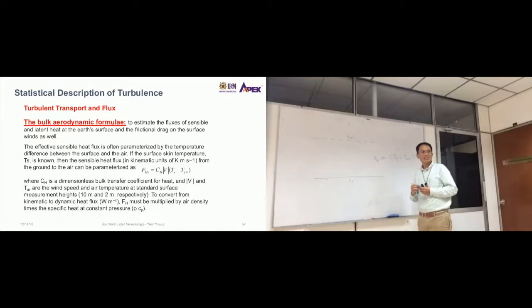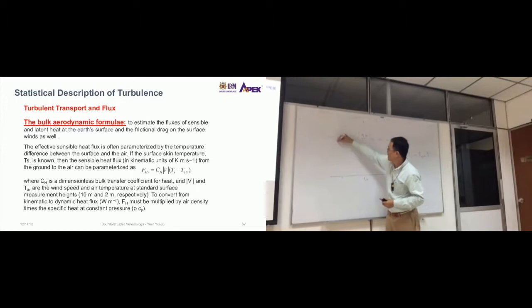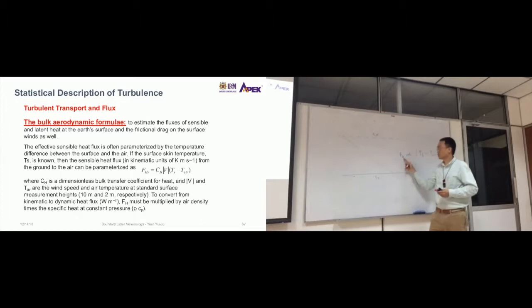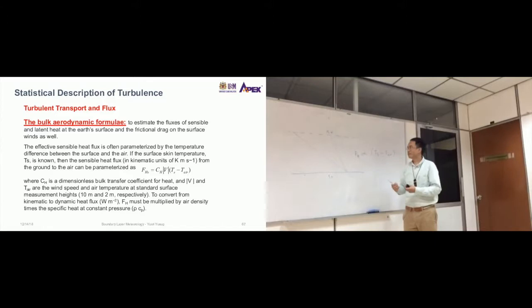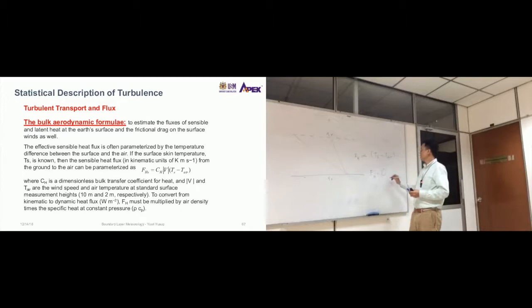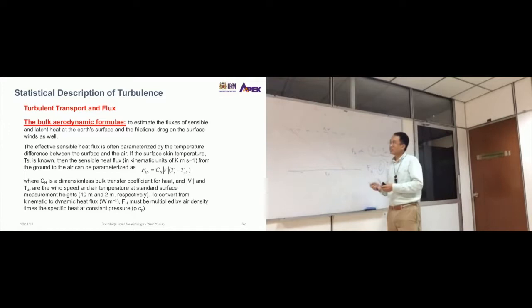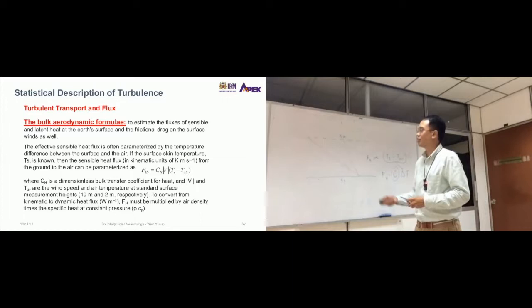If the gradient is large, like this—high temperature, very low temperature here—what happens to the flux? Now, this is just the proportionality. But for you to equate it, there's constants, right? FH equals to, let's say, a constant C, delta T, which is the same as this. The C here is the constant. Now, the constant is just that CH. Now I talk about V. CH is a constant.